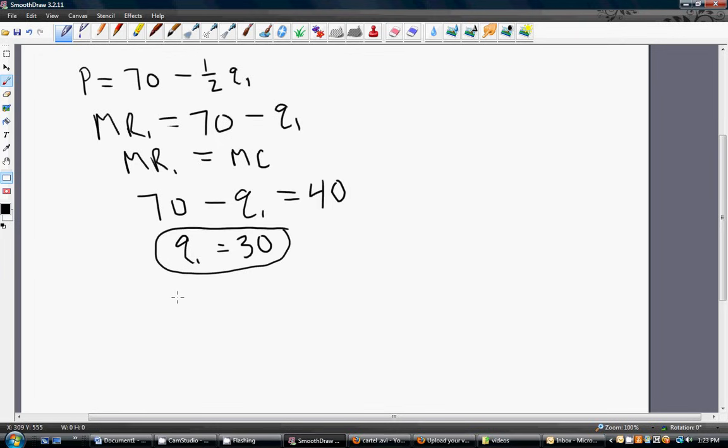Now to figure out how firm 2 is going to respond to that, the optimal output for firm 2 is to take firm 2's reaction function and plug in 30 for Q subscript 1. And firm 2 will produce 15 units of output.